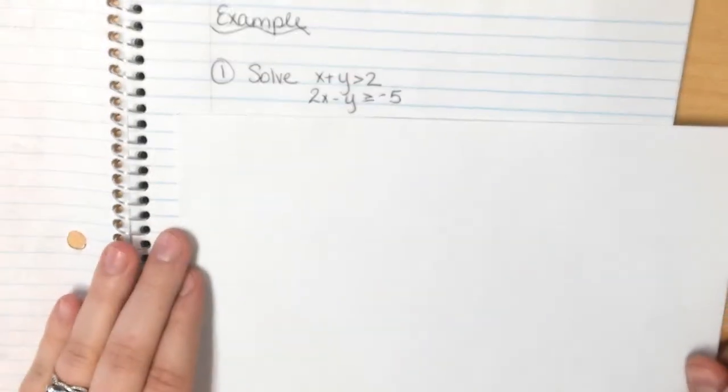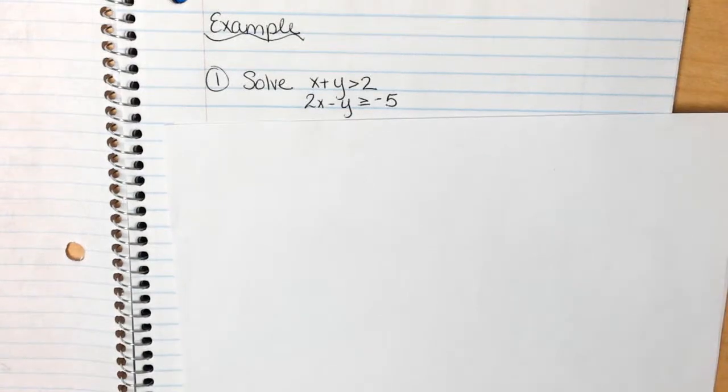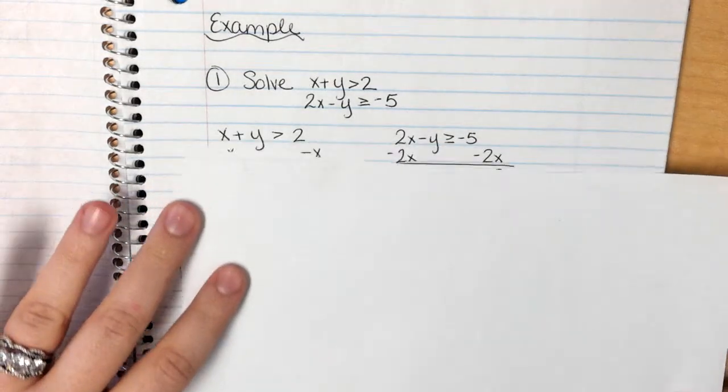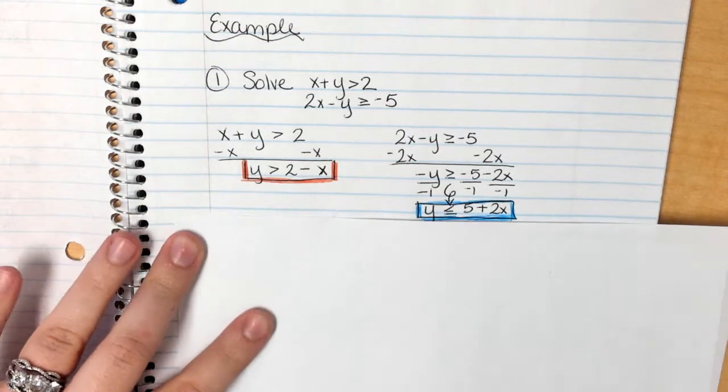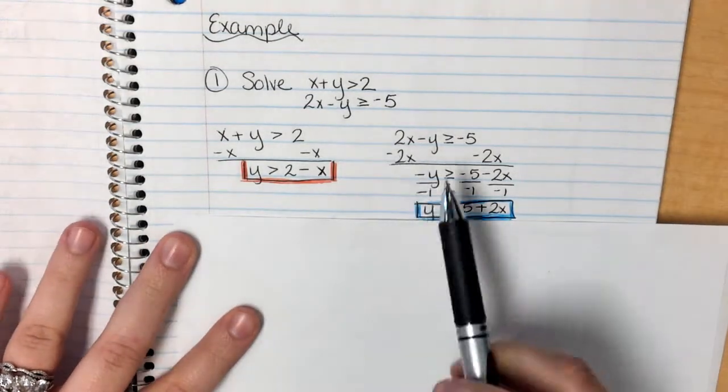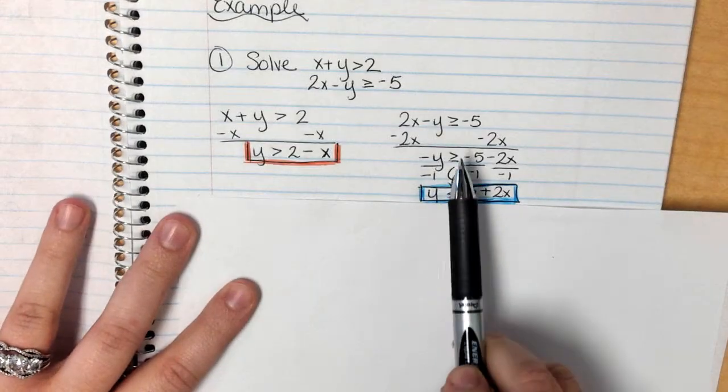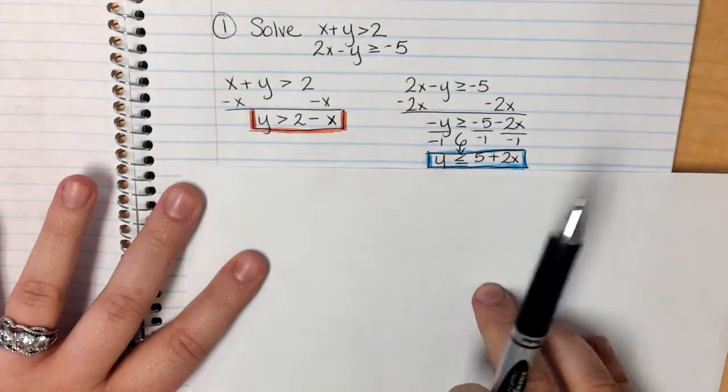Alright, so examples. We're going to take this guy and solve him. We're going to take x plus y is greater than 2, and 2x minus y is greater than or equal to negative 5. The first thing we have to do is solve them, and I'm just going to show you the whole thing because we should be able to solve by now. So minus x on both sides, minus 2x on both sides over here, divide by the negative 1. When we divide by a negative, we have to flip my symbol. That's super important, so don't forget.